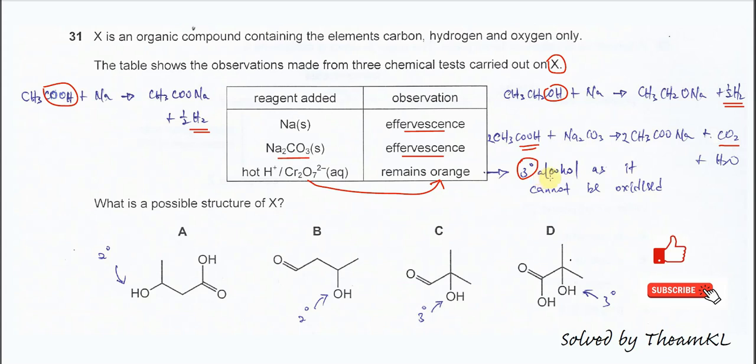Because tertiary alcohol cannot be oxidized. Means the oxidizing agent will not be able to oxidize the X. That's why it remains orange. Orange color means the color no change. So again, if in X it has the alcohol group, it must be tertiary alcohol. So these are the informations that given. And now try to get the possible structure of X.